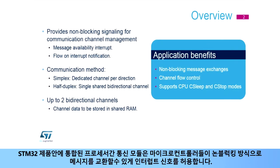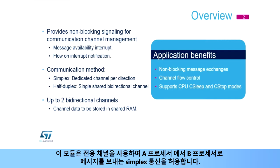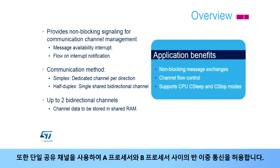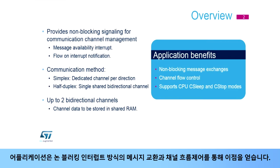The Interprocessor Communication Controller module, integrated inside STM32 products, provides interrupt signaling, allowing microcontrollers to exchange messages in a non-blocking way. This module allows for simplex communication, where a dedicated channel is used to send a message from processor A to processor B. It also allows for half-duplex or message response communication, using a single shared channel to communicate between processor A and processor B. Applications benefit from non-blocking interrupt-based message exchanges and channel flow control.